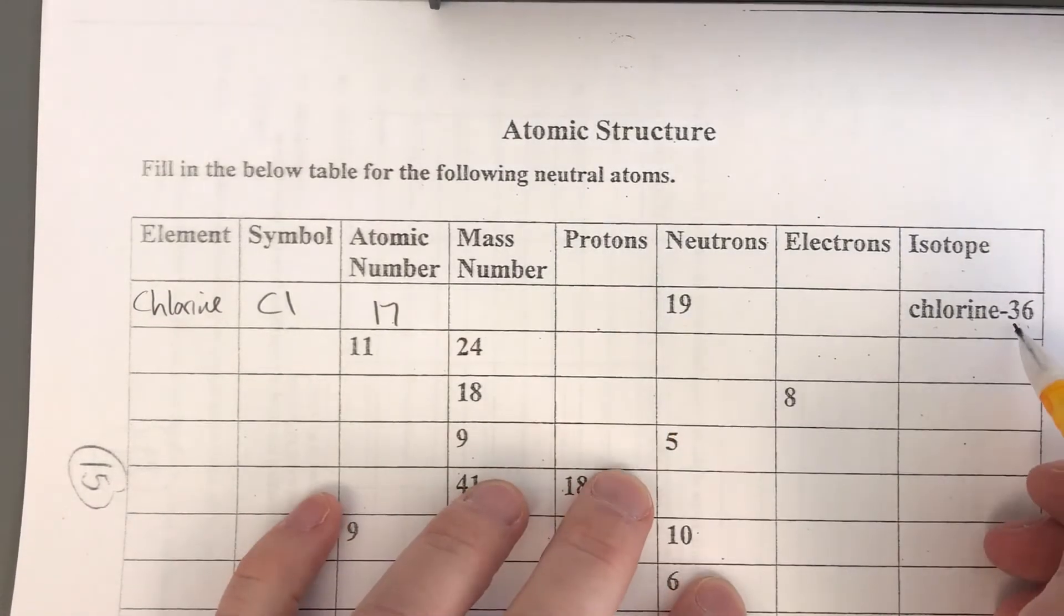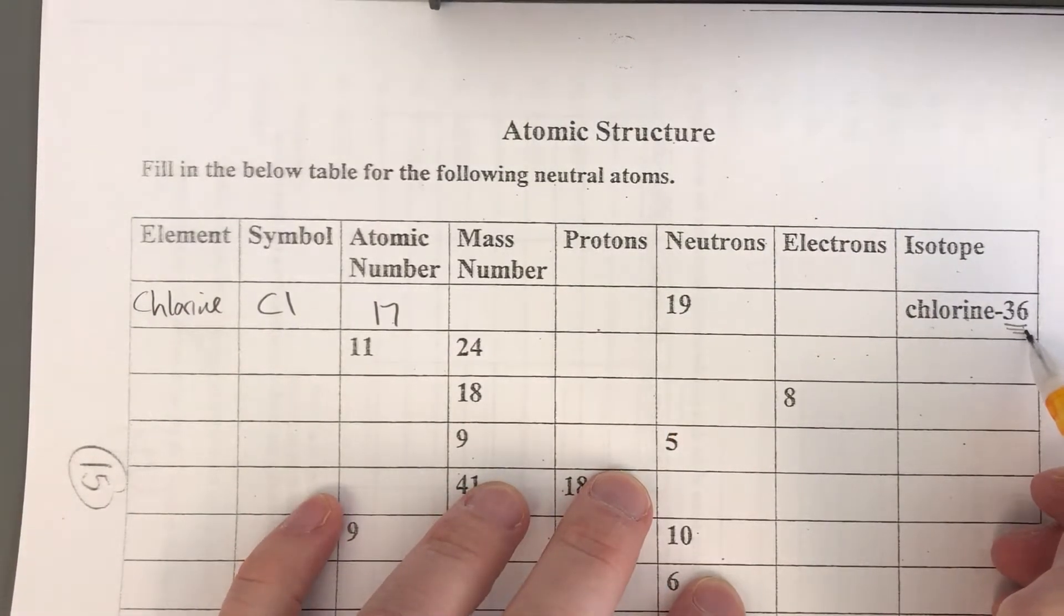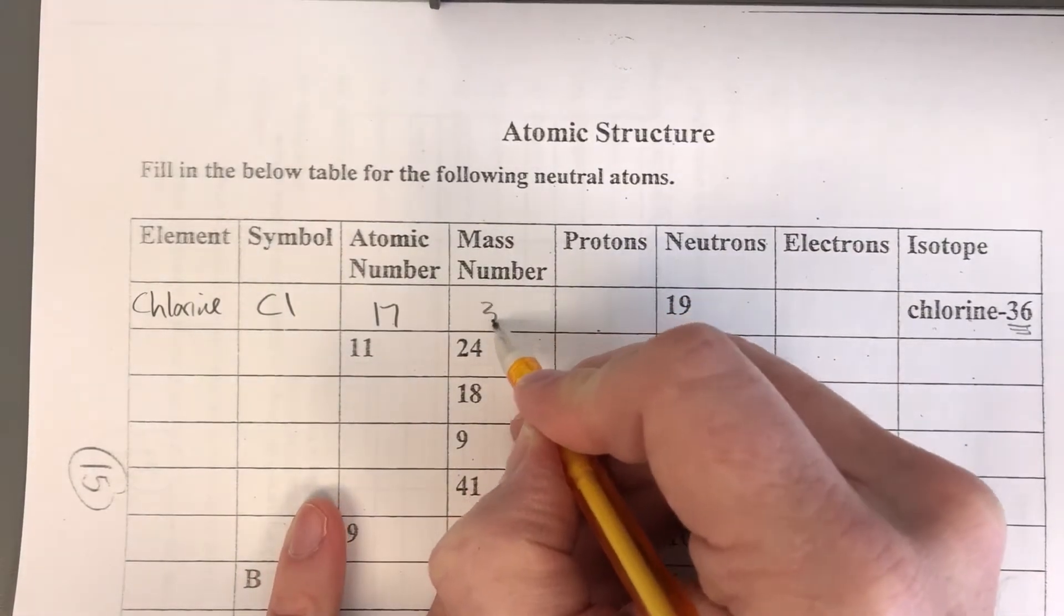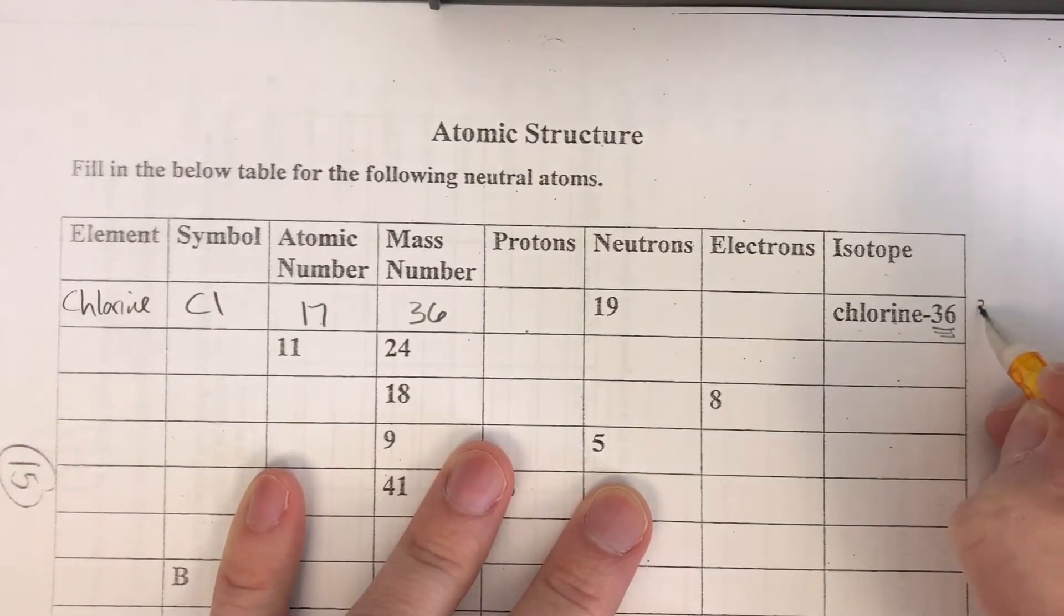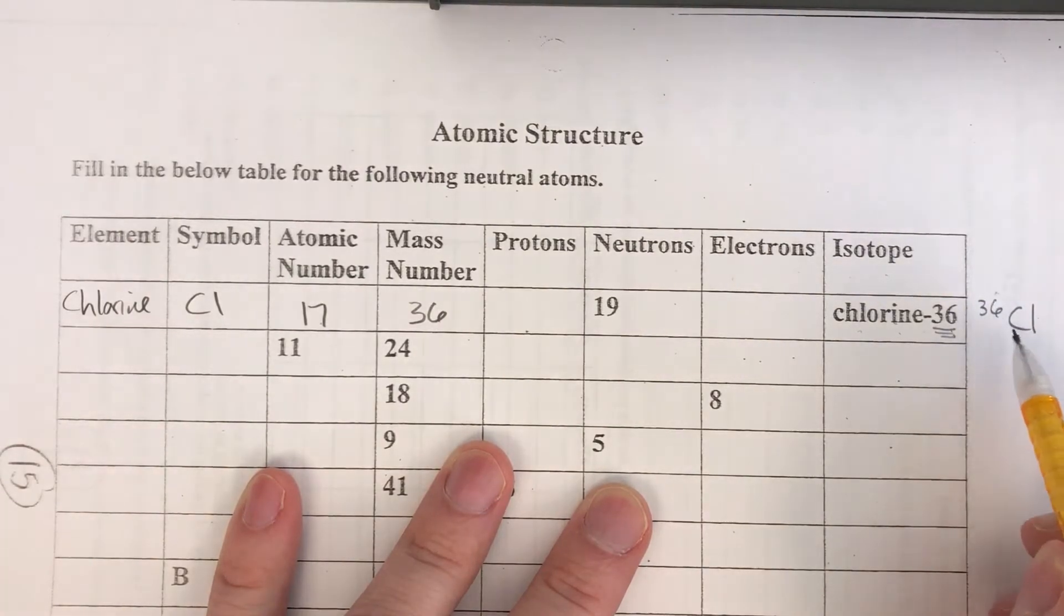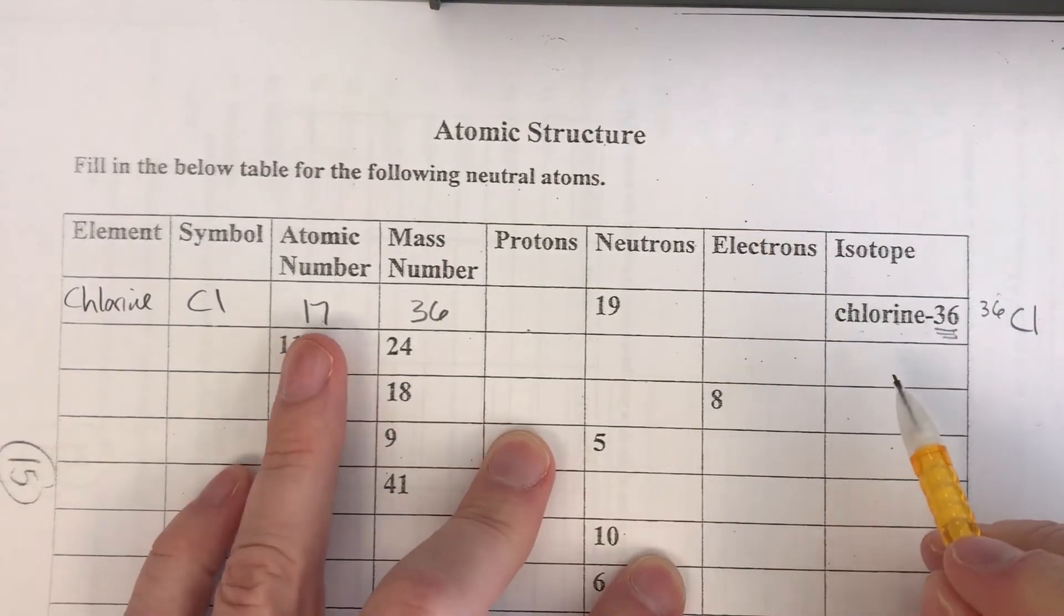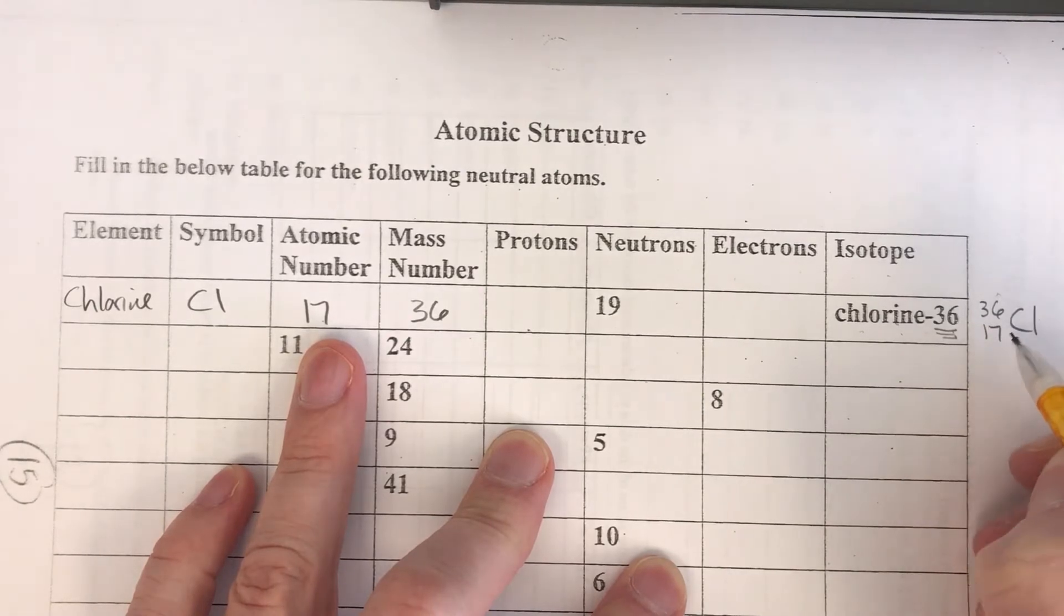When we look at that, the mass number always comes at the very end when we write it this way: chlorine-36. So we're going to put a 36 there. Now over to the side I'm actually going to just put something a little extra. Sometimes you'll actually see it written this way where we have a 36 and then chlorine and then the atomic number as well may or may not be listed at the bottom.